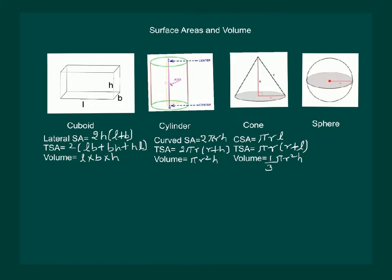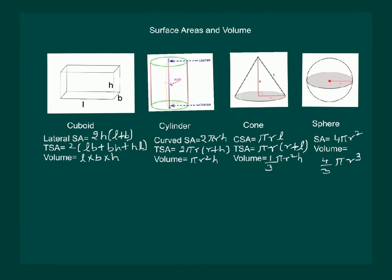Curved surface area of the right circular cone is given by πrl, total surface area is 4πR² and its volume is given by 4πR²H, where R is the radius of the sphere.